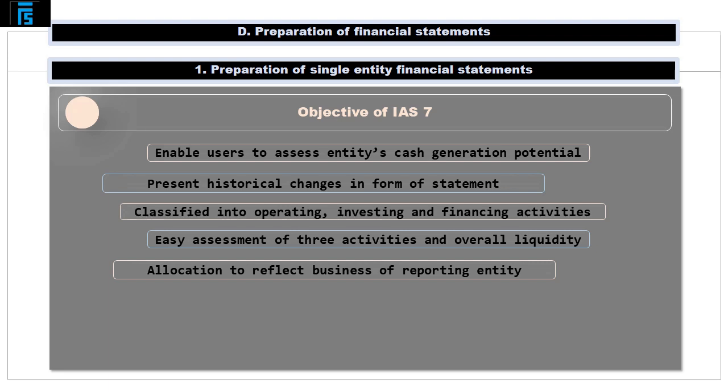Specific cash flows should be allocated to one of the three categories in a manner which reflects the business of the reporting entity. For example, a bank would present the cash consequences of extending a loan under operating activities. On the other hand, the same transaction would probably be classified as an investing cash flow by a non-financial institution.